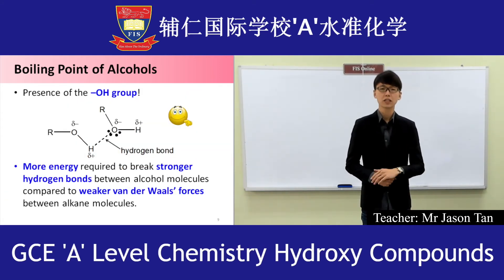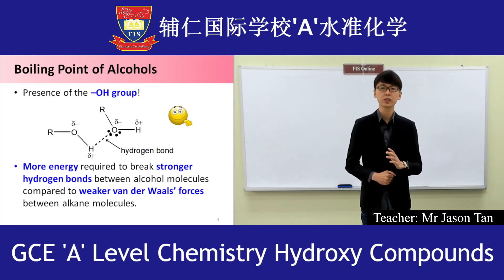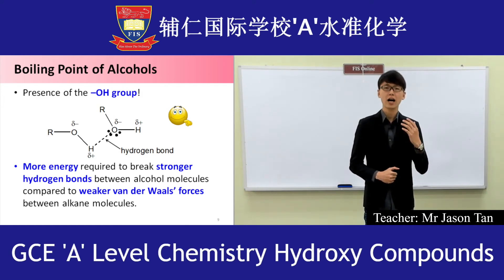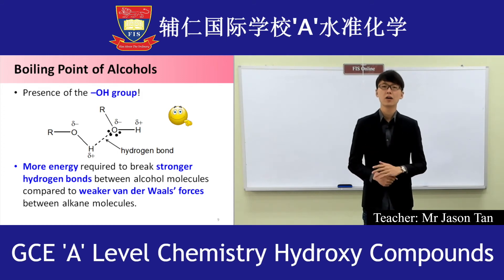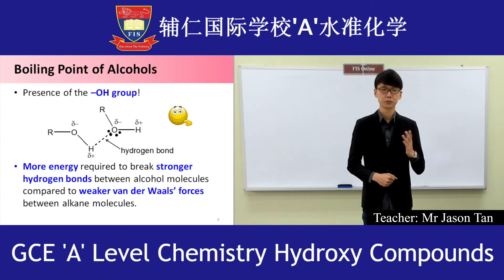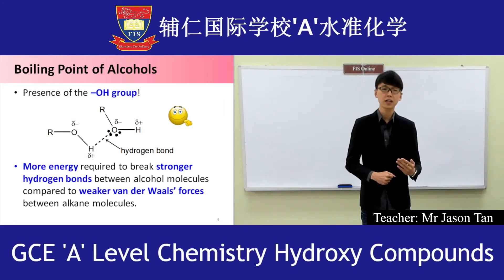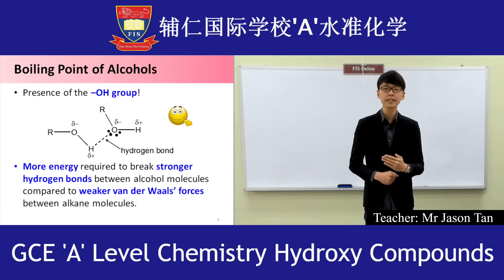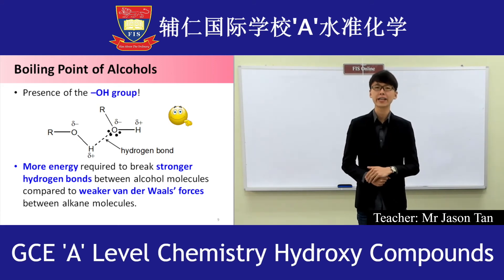In alcohols, because of the presence of the OH group, they can form hydrogen bonds between the molecules. Hydrogen bonding is a stronger form of intermolecular forces. Because of this hydrogen bond, most alcohols have higher boiling points than alkanes of similar molecular mass. The hydrogen bond is illustrated in the diagram shown. Therefore, more energy is required to overcome these stronger hydrogen bonds in alcohol molecules than the weaker van der Waals forces of attraction in alkane molecules.